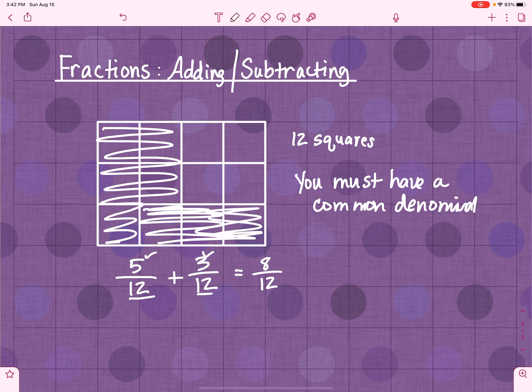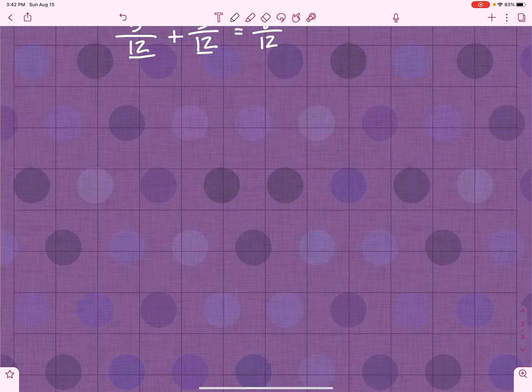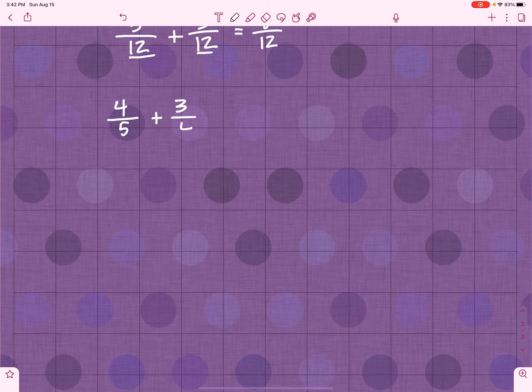Now, if you don't have a common denominator, you've got to get one. How does that work? Well, this is how it works. Let's say I've got 4 fifths plus 3 fourths. So, I could draw you a grid, right?